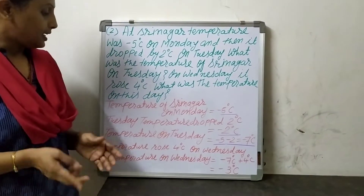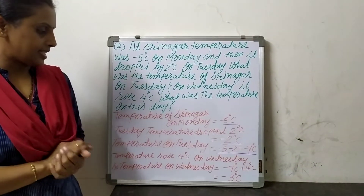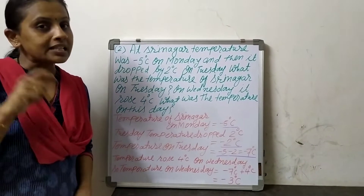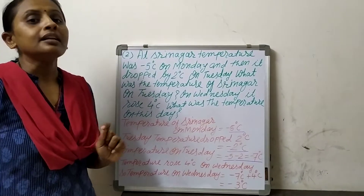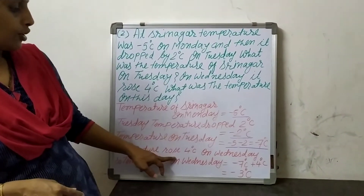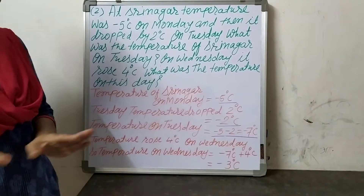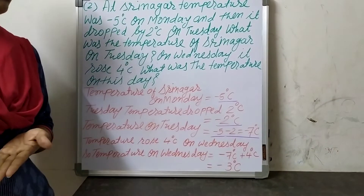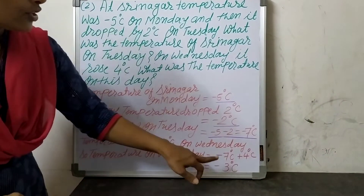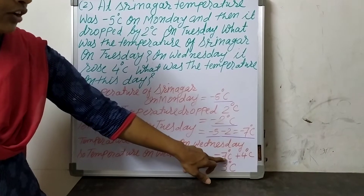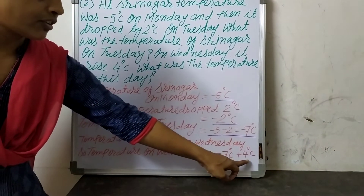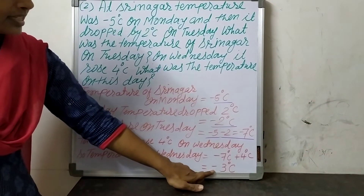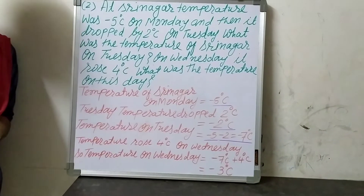Now on Wednesday, the temperature rose by 4 degree centigrade. When it rises, it goes up. So we will use positive integer to represent the temperature of Wednesday. Temperature rose 4 degree centigrade on Wednesday is equal to 4 degree centigrade. So temperature on Wednesday is equal to temperature of Tuesday plus temperature of Wednesday. Minus 7 degree centigrade was on Tuesday, and now it rose by 4 degree centigrade, so we will add 4 degree centigrade. The temperature on Wednesday is minus 3 degree centigrade.